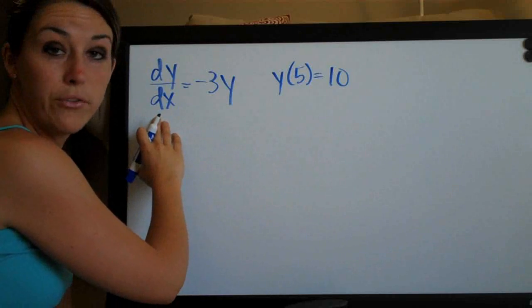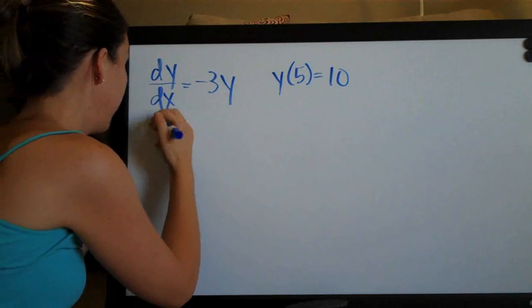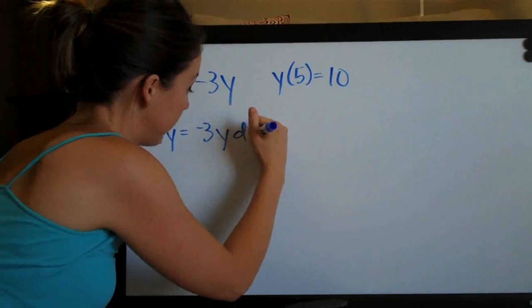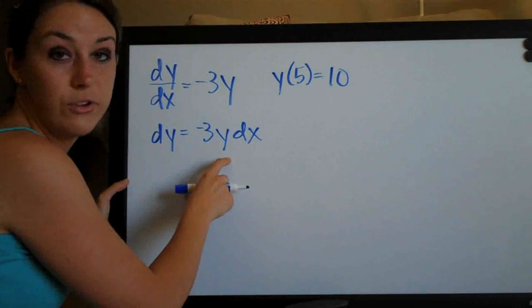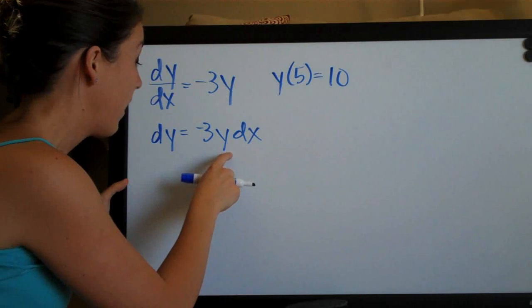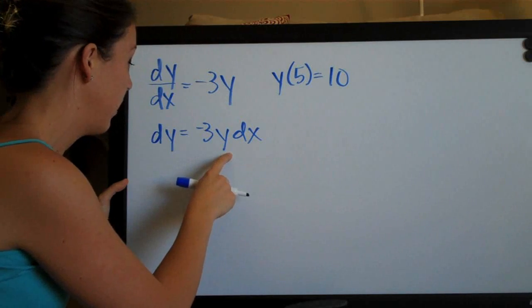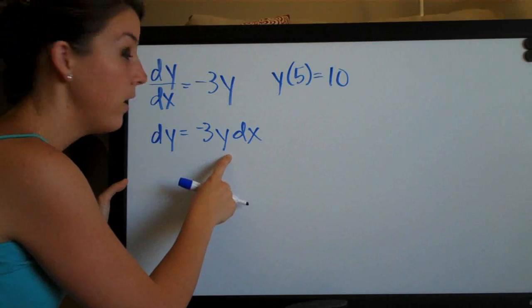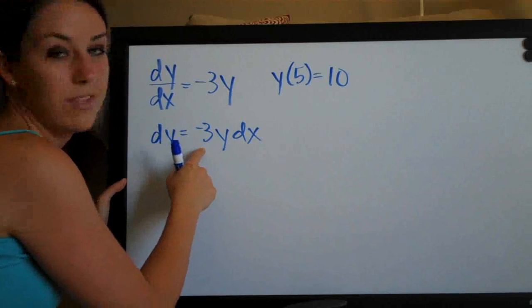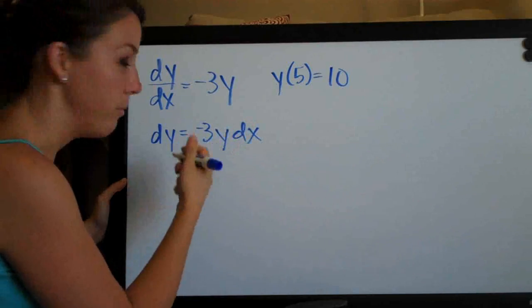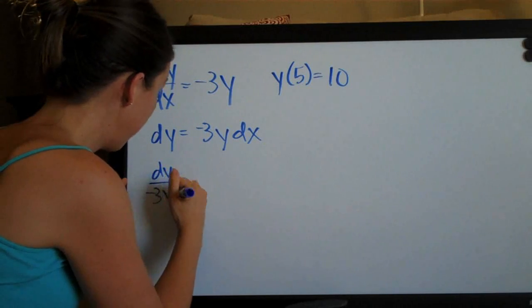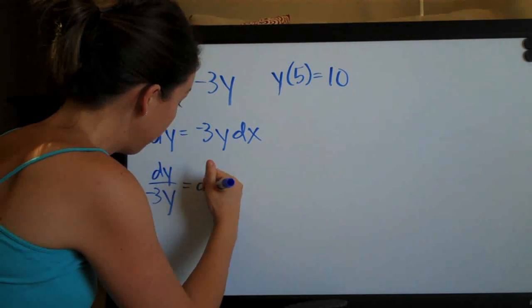So we start by multiplying both sides by dx and we get dy equals negative 3y dx. Then to continue separating variables, we divide both sides by y. In this case, I'm going to divide by negative 3y to separate the y's from the x's. So you can leave the negative 3 on either side. I'm going to move it to the left side. So you'll have dy over negative 3y equals dx.